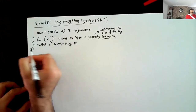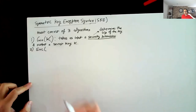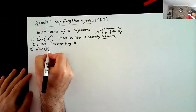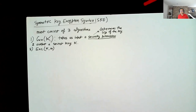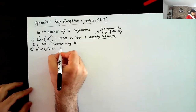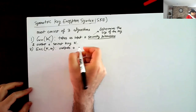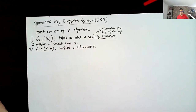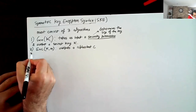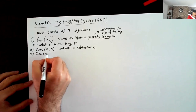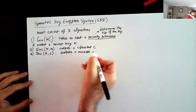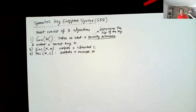The second algorithm is the encryption algorithm. It takes two inputs: the secret key k from key generation, and the message you want to encrypt. It outputs a ciphertext C. Finally, we have the decryption algorithm, which takes the secret key as input along with the ciphertext, and outputs a message M. This is what the basic syntax looks like — I have not talked about security or any properties yet, but let me make two remarks.